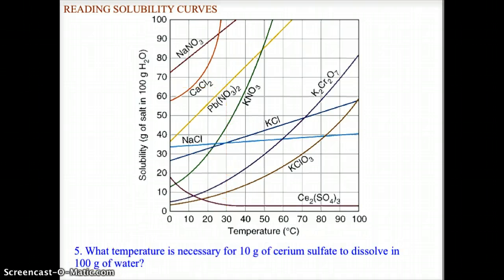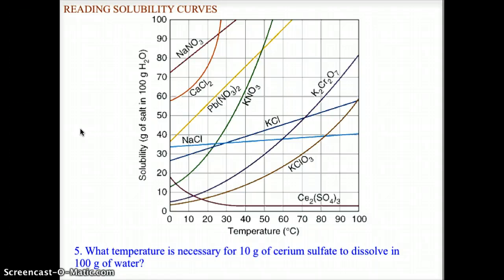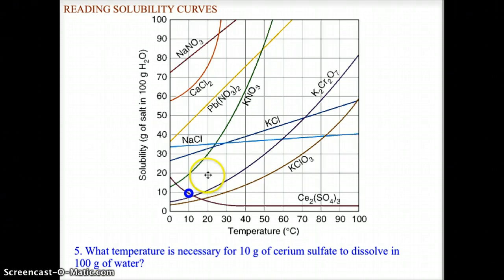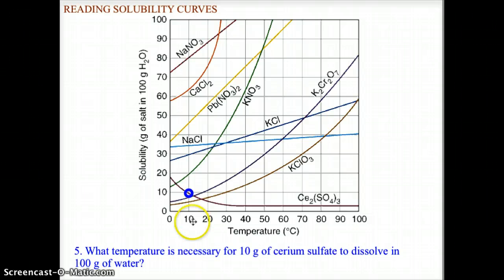What temperature is necessary for 10 grams of cerium sulfate to dissolve in 100 grams of water? Cerium sulfate is a gas, so we use the decay curve at the bottom. At 10 grams of cerium sulfate, the corresponding point on the curve coordinates with 10 degrees Celsius. So 10 grams of cerium sulfate dissolves in 100 grams of water at 10 degrees Celsius.